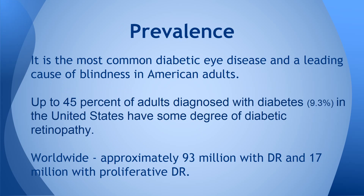Prevalence — how often does this happen? Believe it or not, it is the most common eye disease in America among adults. Up to 45% of adults diagnosed with diabetes in the US have some degree of DR. Keep that in perspective: 9.3% of the American population is considered diabetic, and of that 9.3%, up to almost half will have some degree of diabetic retinopathy — which is really a high number.